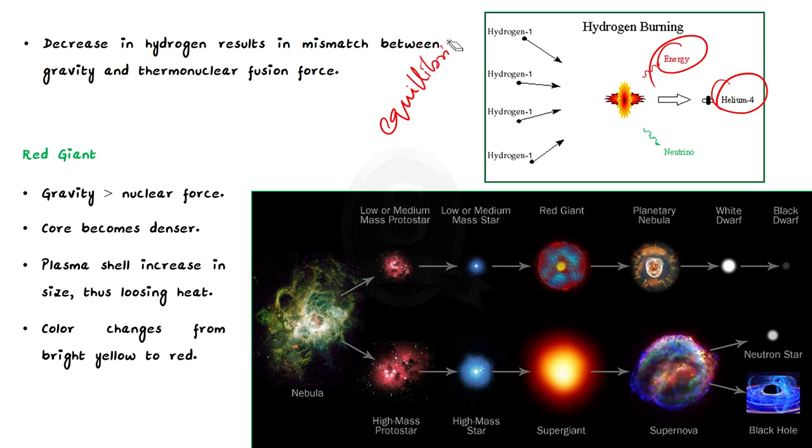The inward force of gravity overpowers the outward force of thermonuclear fusion. This mismatch results in the collapse of the star's core. Once the core begins to collapse, the plasma around the core begins to expand. As the shell of plasma increases in size, it loses more heat, and its temperature starts decreasing.